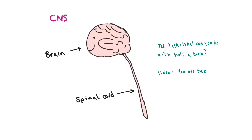Our brain is encased by the skull, which is an excellent protective unit, but sometimes it can be problematic. For instance, if you suffer a concussion or brain injury and your brain hits your skull in a sudden impact, it can cause bruising, injury, and swelling. Because the brain is enclosed by the skull, it doesn't have room to expand, so sometimes we have to remove a portion of the skull to allow the brain to expand and heal.